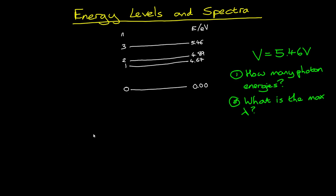Well first, if 5.46 volts are supplied to the tube, it means that each conduction electron is provided with 5.46 electron volts of energy. So the atomic electrons they collide with will be excited to an energy level of 5.46 volts. First, let's work out how many possible ways there are for an electron to drop from 5.46 electron volts back to the ground state.